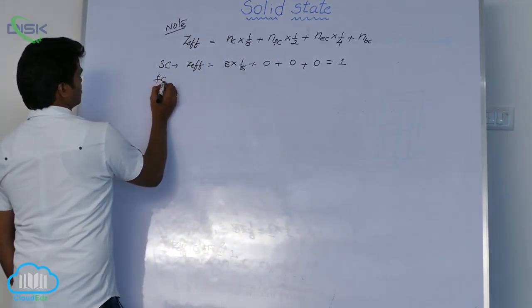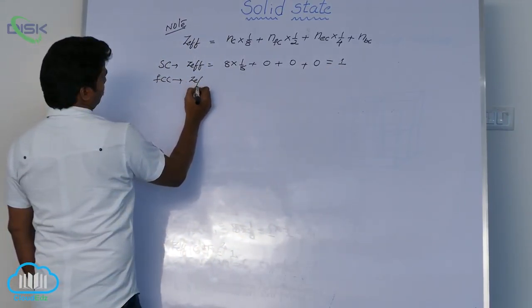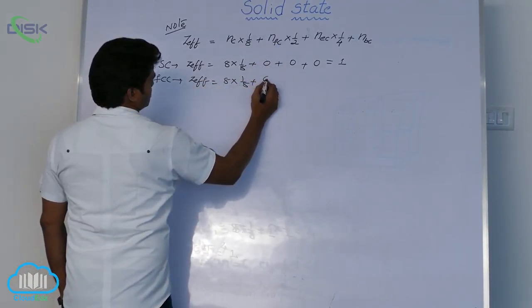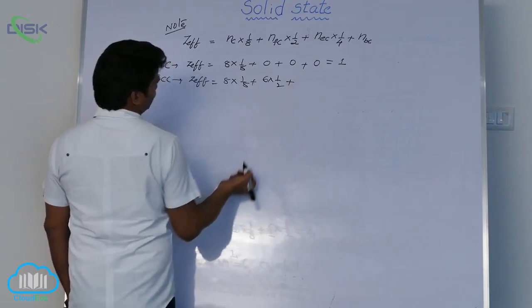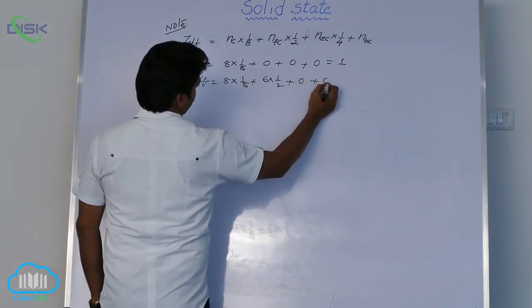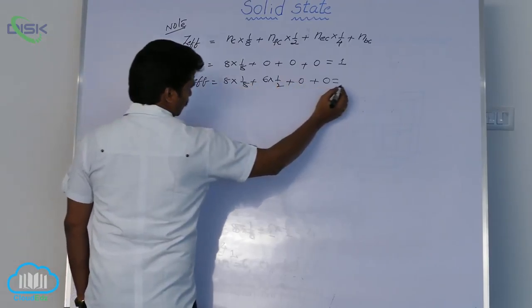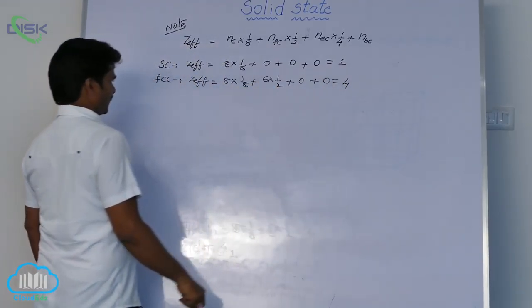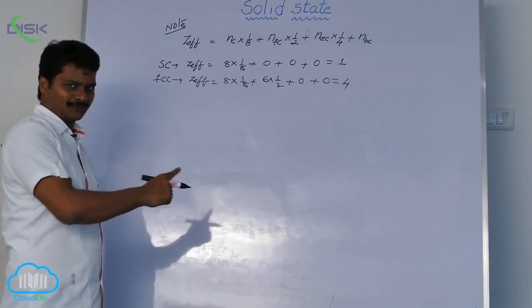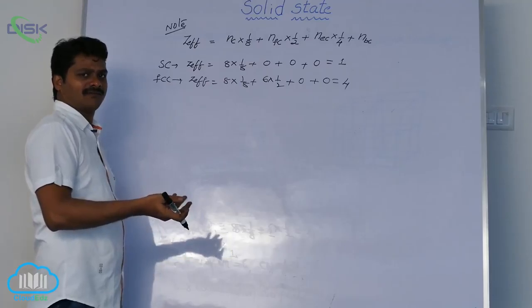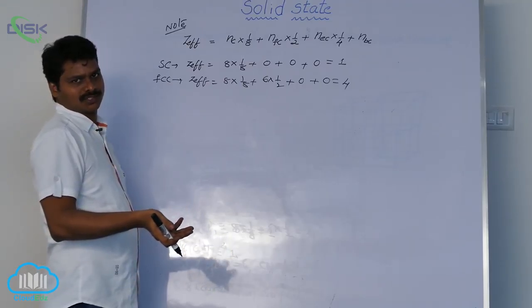For FCC, Z effective 8 into 1 by 8 plus 6 into 1 by 2 plus 0 plus 0. Here total 8 into 1 by 8, 1 plus 6 into 1 by 2. So effective number of atoms in FCC is 4, this is the shortcut formula for doing objective questions.